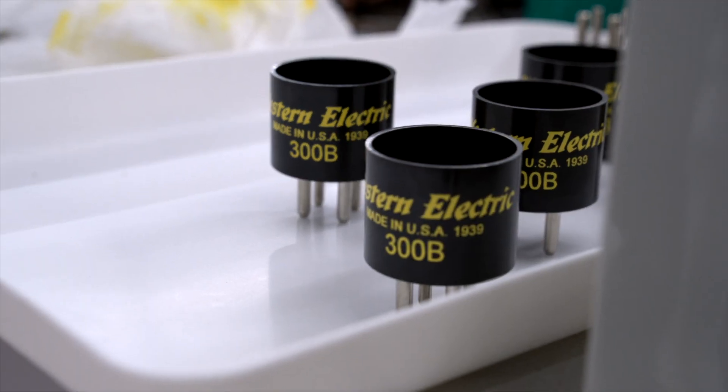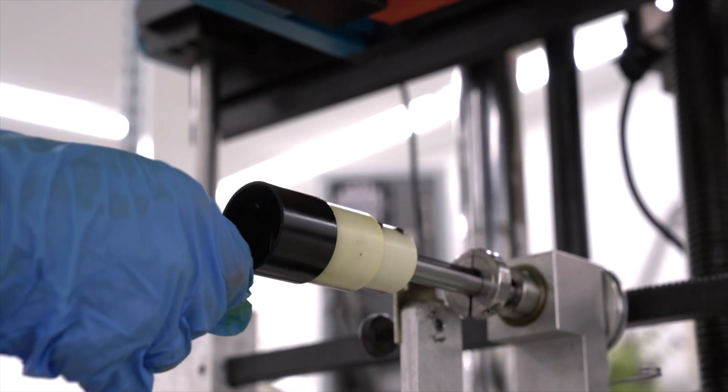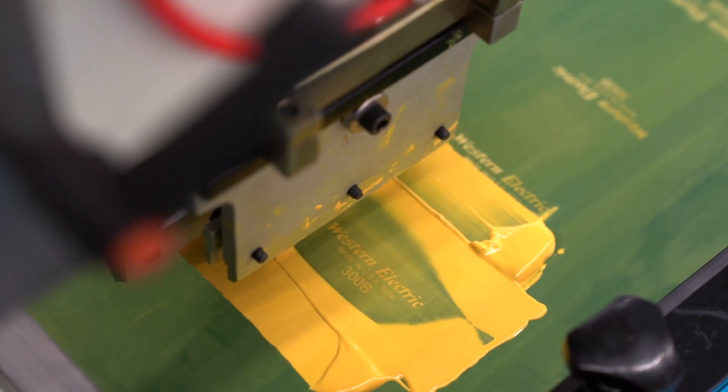The silk screening process is performed on an automated machine. In the beginning we load the screen, then we flood the screen with a special ink developed for this phenolic base. The flooding bar brings the ink across the screen.